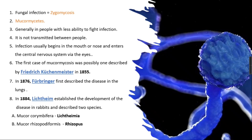The two species were named Mucor coribifera and Mucor risopertiformis. Later, Lichtheme himself renamed these two species with common names — for the species Mucor coribifera, he named it Lichthemia, after his own name.